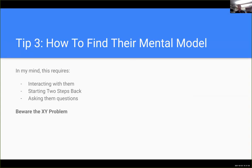Tip three: how do you find somebody's mental model? We understand our job, we know to step back and ask about their mental model, and they feel safe enough to talk to us. There are a few steps to think through. First: you cannot find somebody's mental model just by looking at their code. The code is like a two-dimensional representation of what's in their head — but you won't figure out the whole story that way. You need to interact with them and ask questions.